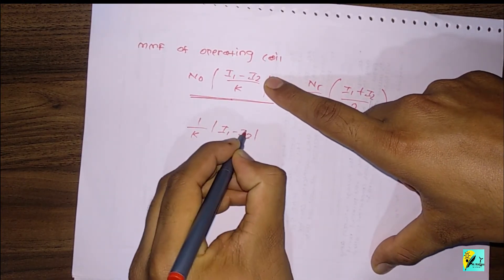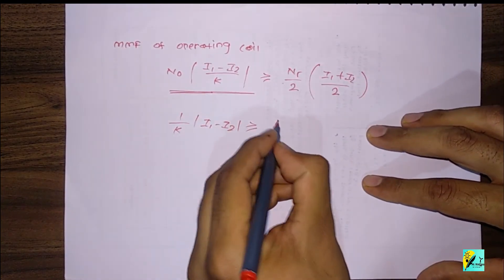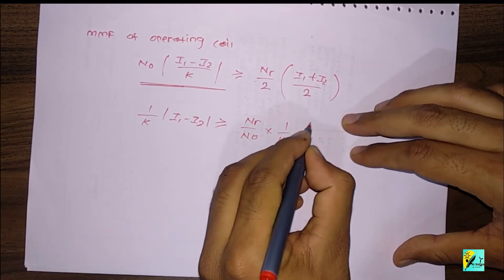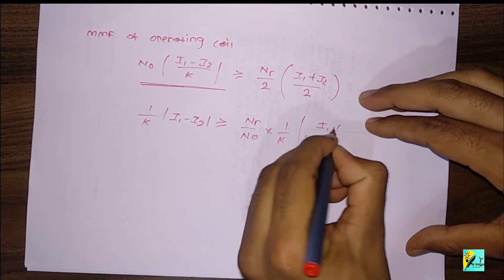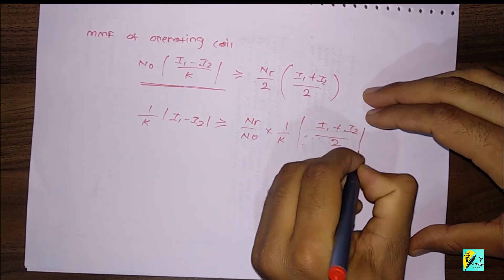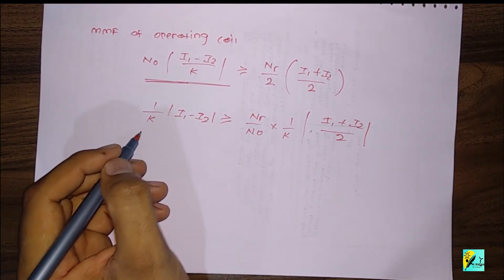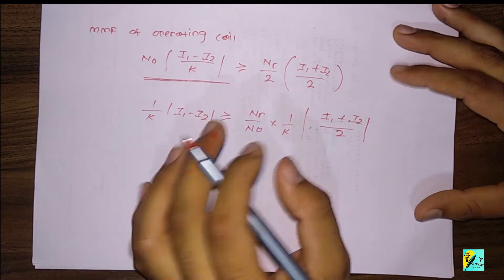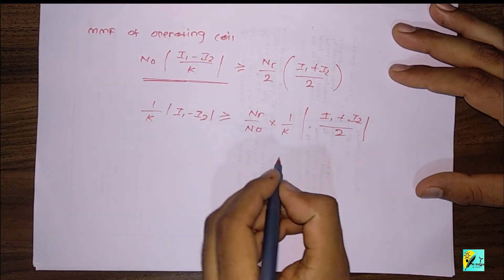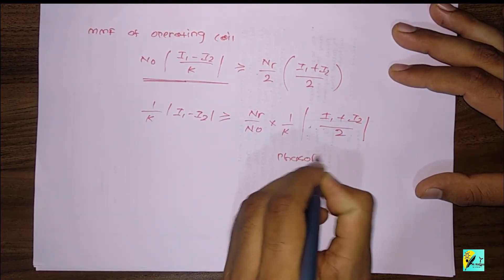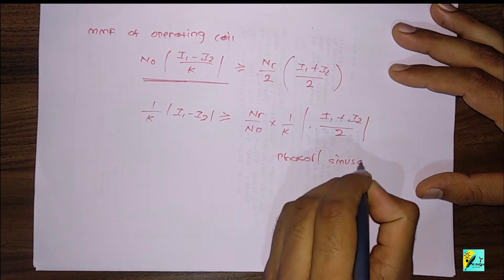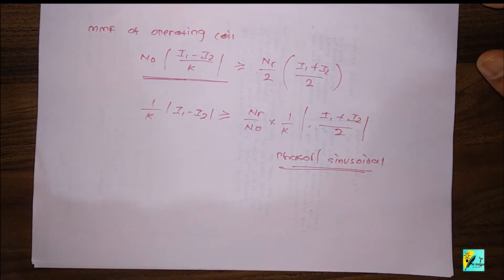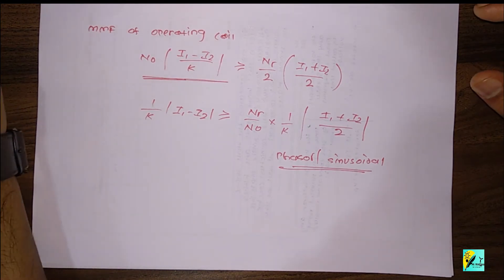Rearranging, I1 minus I2 should be greater than or equal to (Nr/N0) multiplied by (I1 plus I2) divided by k. Here I am using magnitude because current is a complex number — it is a phasor or sinusoidal in nature.